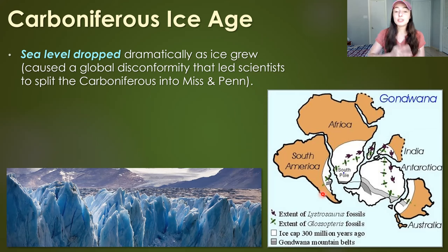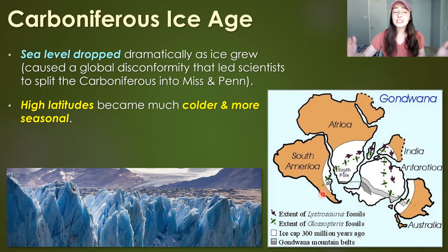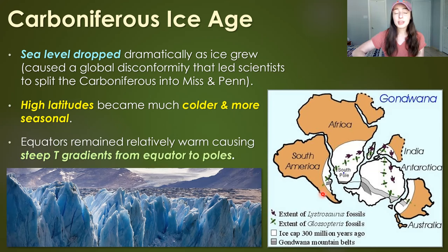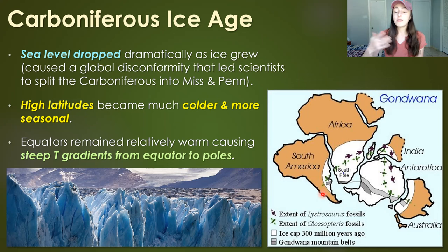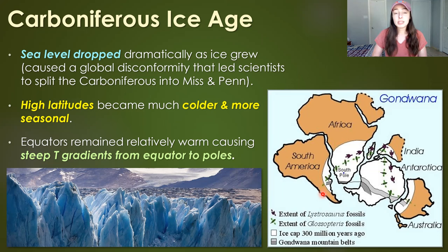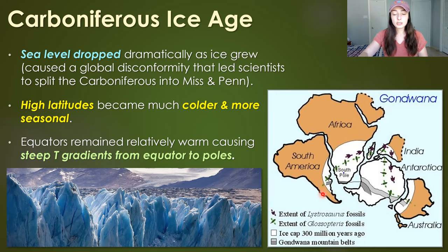This global disconformity in part led scientists to split the Carboniferous into the Mississippian and the Pennsylvanian, where the Pennsylvanian included the ice age time period. In this ice age, high latitudes became much colder and more seasonal, and because the equator didn't cool as much as the poles, this steepened the temperature gradient from equator to poles — which can greatly affect ocean circulation, since a steeper gradient means stronger winds and more upwelling.